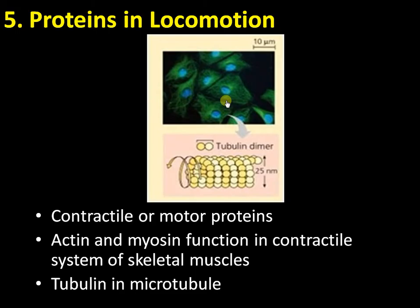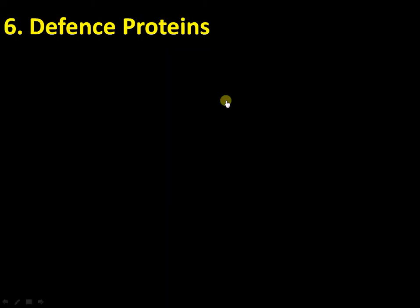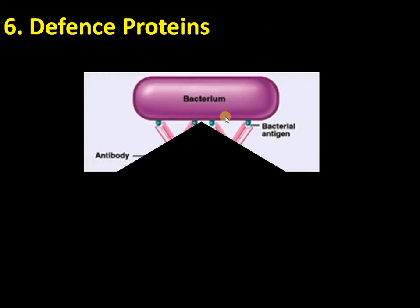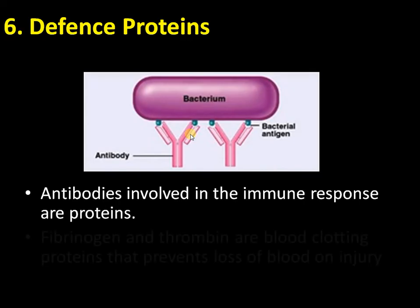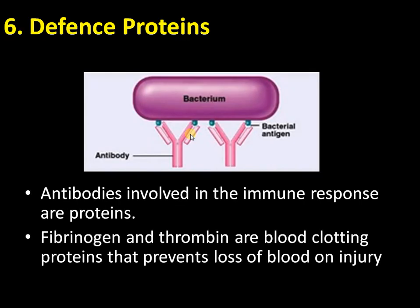There are also defense proteins. Antibodies are the major defense molecules inside the body. Antibodies can specifically bind to a bacterium, either neutralizing it or preventing attack by that particular bacterium or other pathogens, and are involved in the immune response. Fibrinogen and thrombin are blood clotting proteins that prevent loss of blood upon injury.